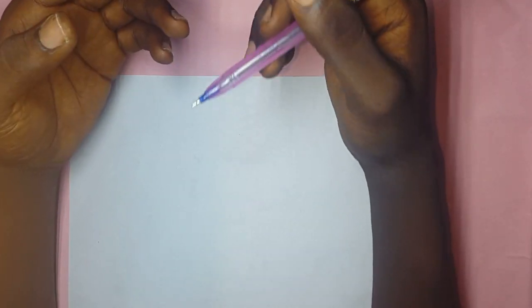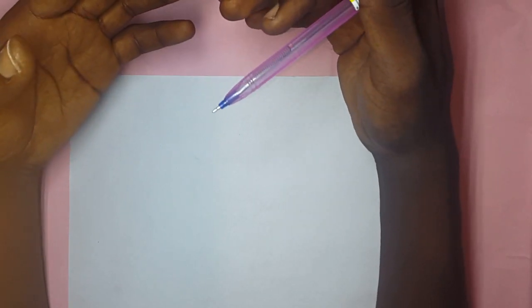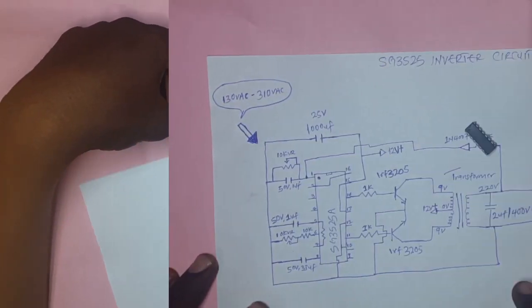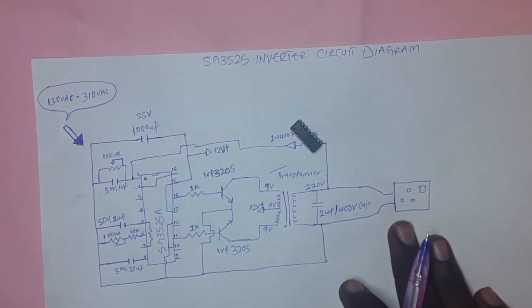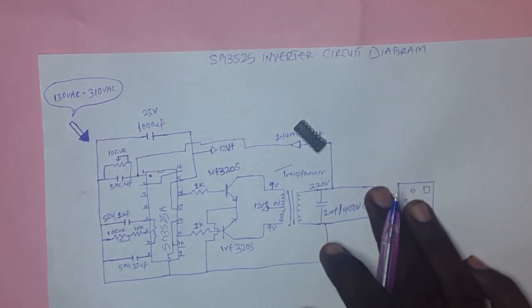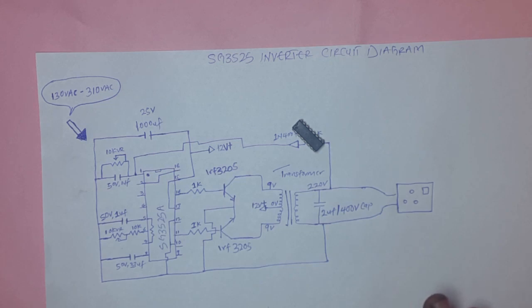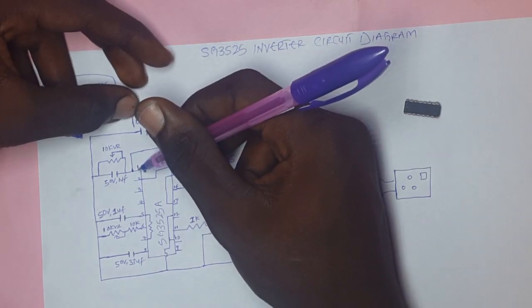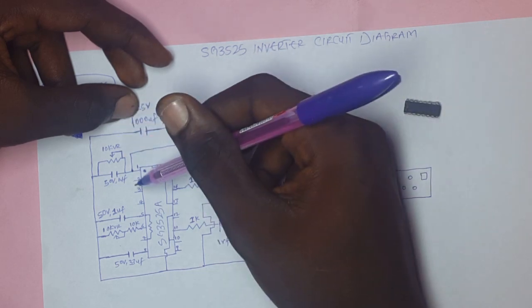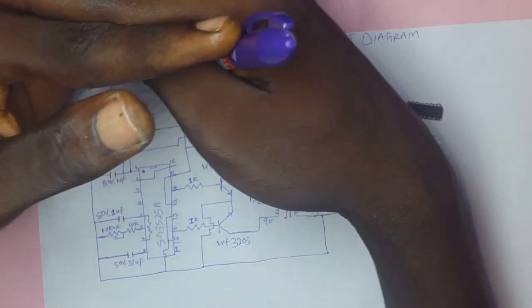So this is the schematic diagram of the HG3525 inverter. Let me explain how everything works. Pin 1 is the inverted input and pin 2 is the non-inverted input. I'm going to explain this in layman's terms so you can understand — I won't go too deep into the IC.